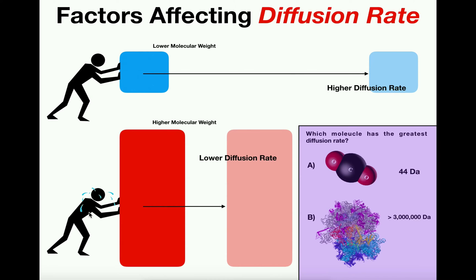The first factor that affects diffusion rate is molecular weight. Molecular weight is basically a measure of the mass of a substance. Let's use an analogy before we get into the molecular side of this. We've got the same person, and in one case he is moving a small block, and in the other case he's moving a much larger, heavier red block.